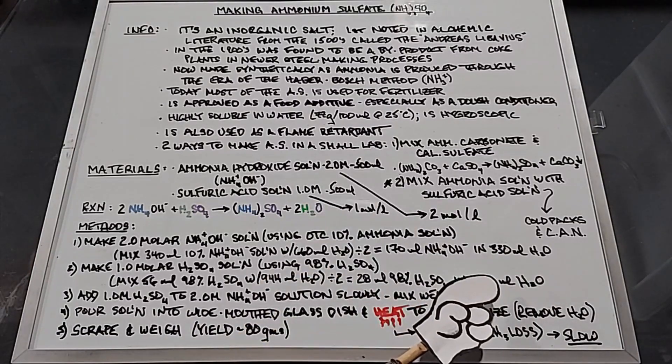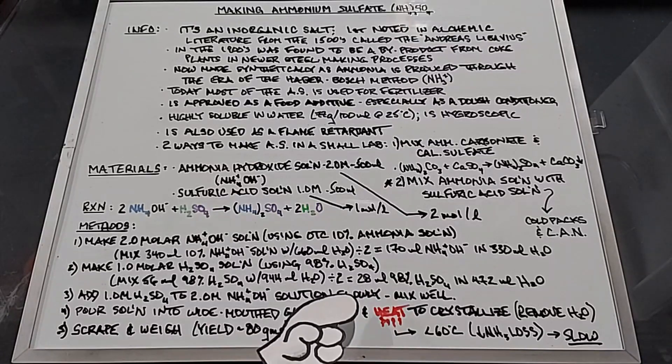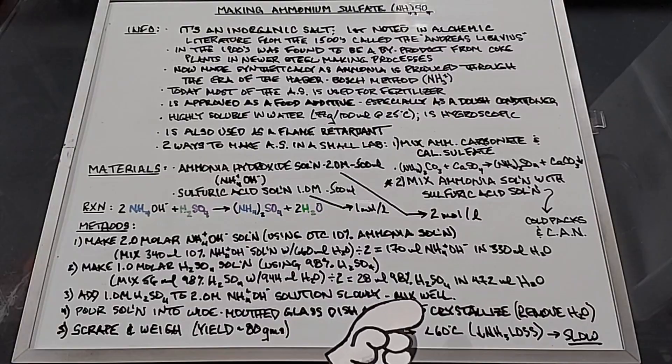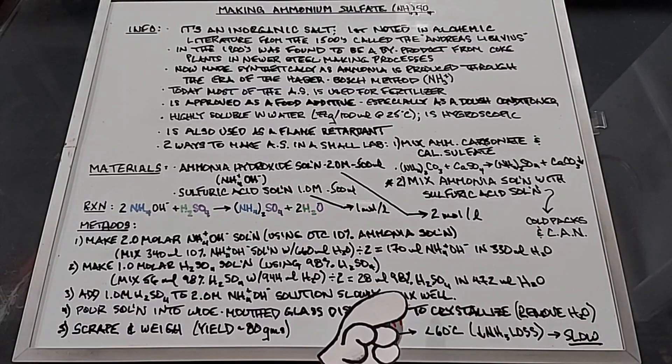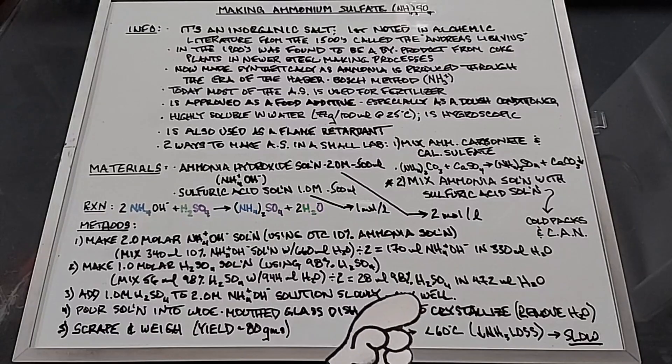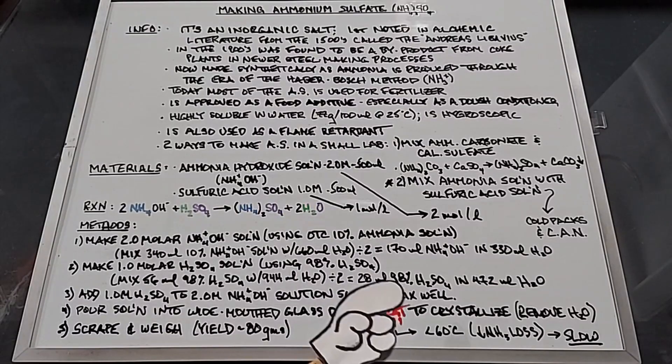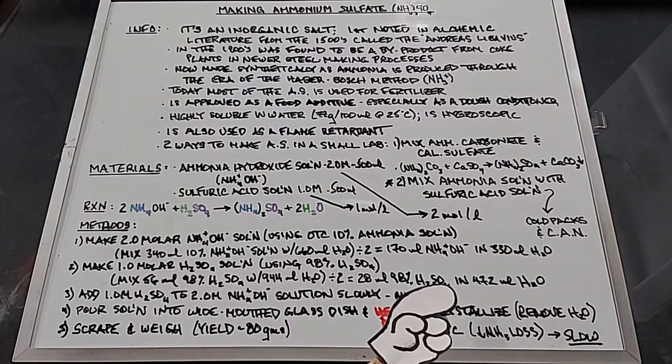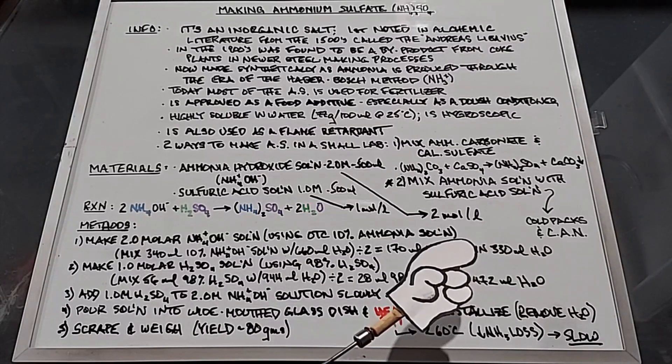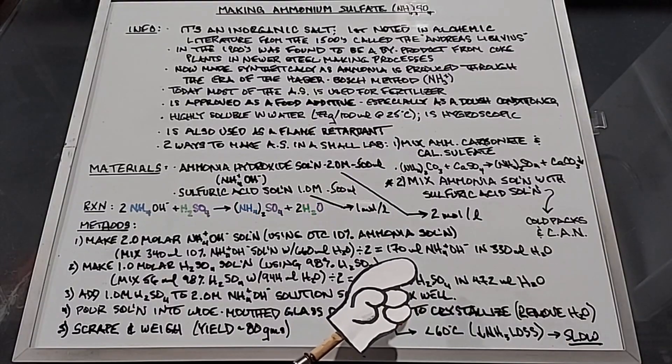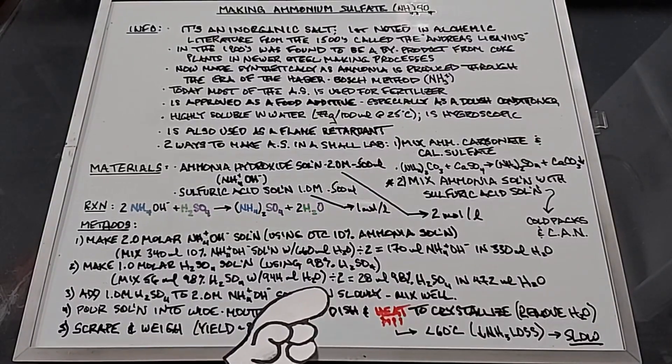Next we're going to add the one molar sulfuric acid solution we just made to the two molar ammonia hydroxide solution very slowly. This is exothermic. Once they're mixed we want to continue to mix them really well. One of the ways that you'll know you've mixed the solutions well is that when you are done mixing, the ammonia odor will disappear. The other thing that's important is you watch the pH. You want the pH slightly acidic, around 5, 5.5, even 6 somewhere in that range.